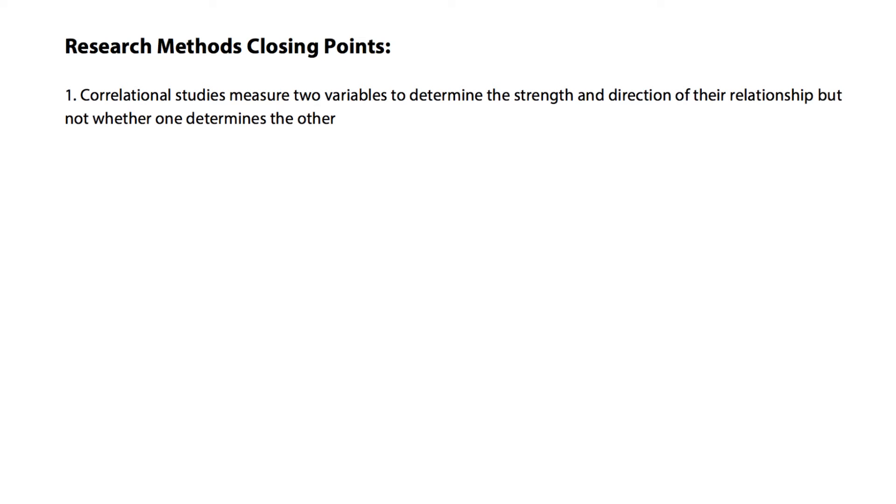In correlational studies, two variables are studied, such as the amount of housework and the number of sexual encounters. As it turns out, these two things were related, but remember that correlations tell us only about the strength and direction of the relationship, not whether one causes the other.